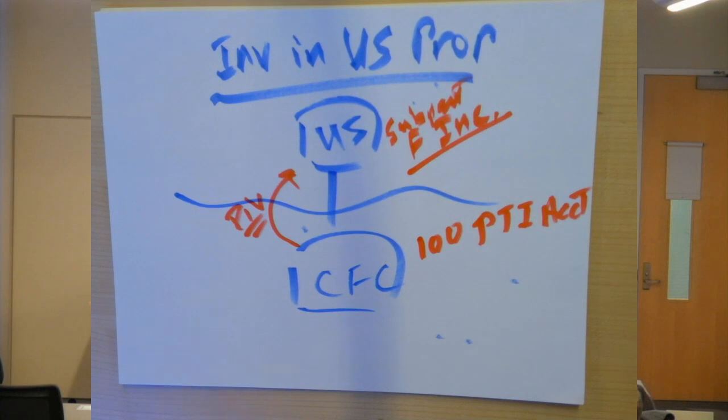This previously taxed income approach prevents double counting. And what code section is this? This is 959.